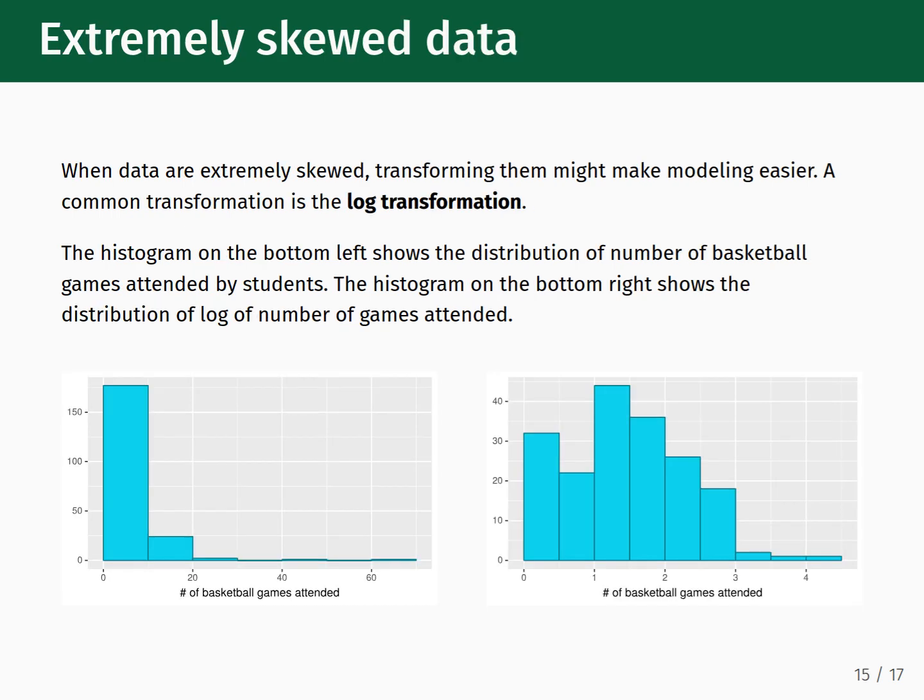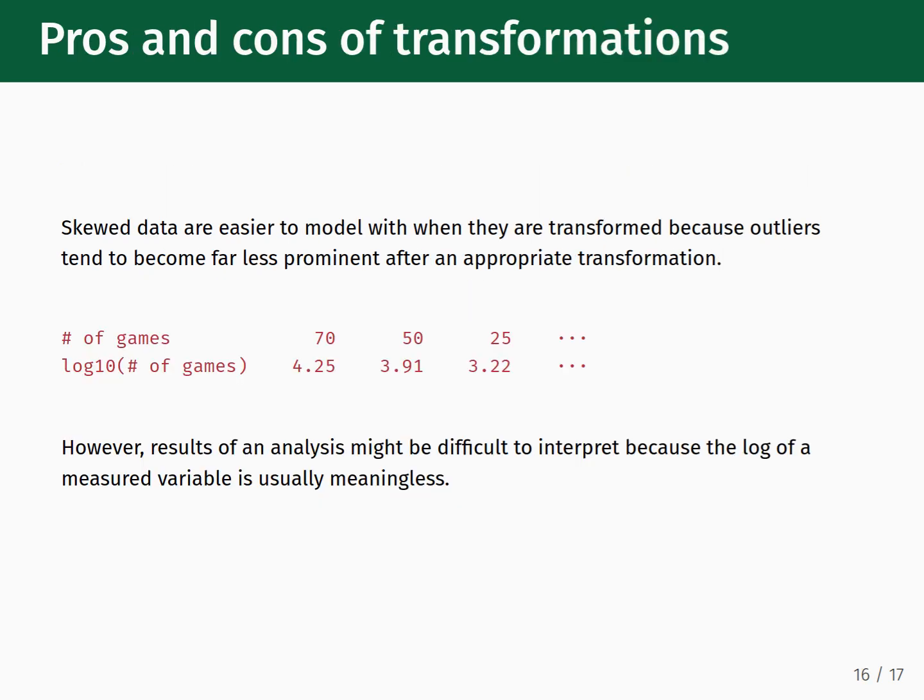So, what should we do if we are looking at extremely skewed data? When the data are extremely skewed, then applying a transformation might make interpreting and modeling them easier. A common transformation for dealing with skewed data is called the log transformation. As an example, the histogram on the bottom left shows the distribution of a number of basketball games attended by students. The histogram on the bottom right shows the same distribution after a log transformation has been applied. As you can see, we get a better idea of the variation of the data after applying the transformation. In general, skewed data are easier to model when they are transformed because outliers tend to become far less prominent after an appropriate transformation is applied.